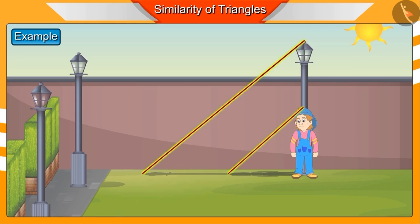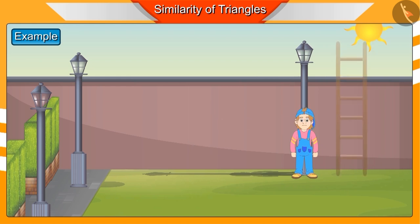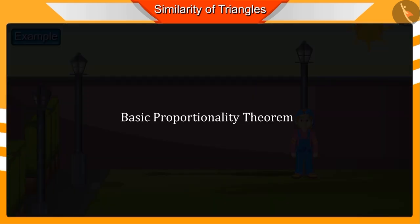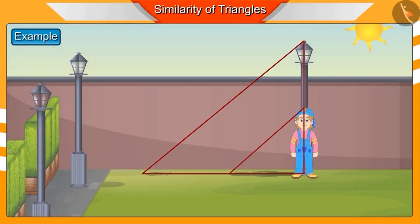If the height of Nakul is five feet, then find the height of the pole. Can you find this? You may think that it is not possible to do this without a ladder and a scale, but solving this and such similar questions becomes easy with the help of basic proportionality theorem.